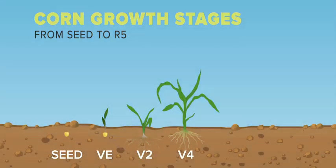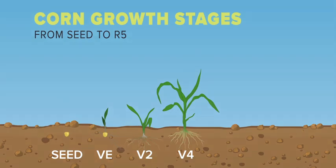During the V4 to V6 stages, the uppermost ear and tassel is initiated and kernel row numbers are determined. The growing point of the corn plant is near the surface. The V6 stage occurs at approximately 475 GDUs.